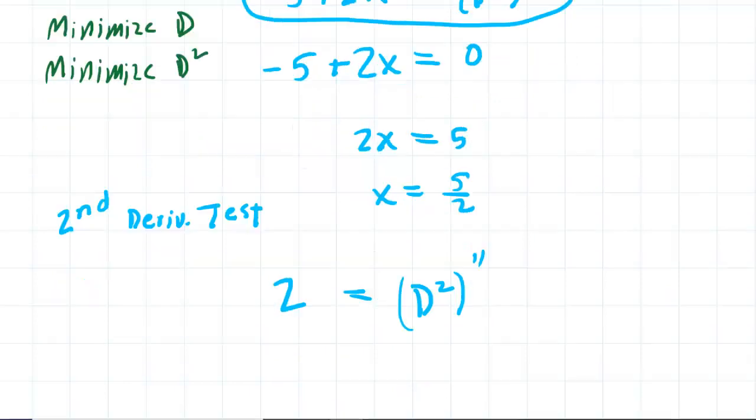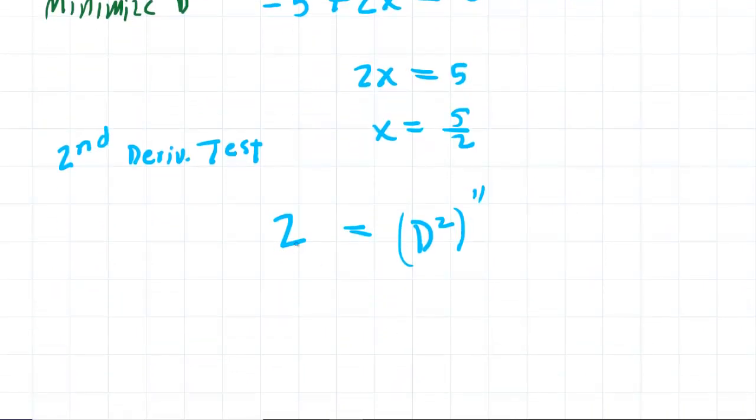Notice that the second derivative is positive no matter what the x value is. And we know that when the second derivative is positive, that means that the curve is concave up. And so we can indeed see that at our critical point of x equals 5 halves, that our curve, our distance squared curve, if you will, will indeed be concave up. And that proves that we indeed have a minimum at 5 halves. So this is the correct x coordinate that minimizes that distance.